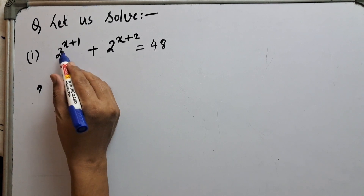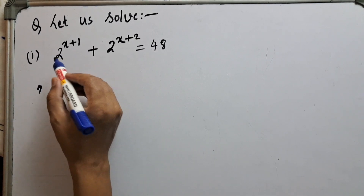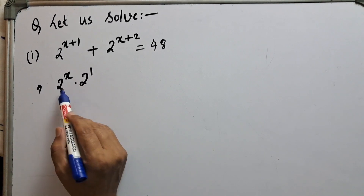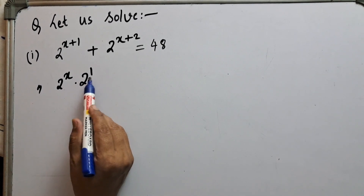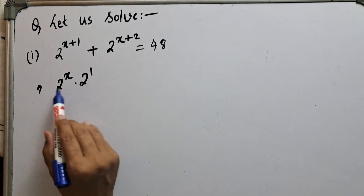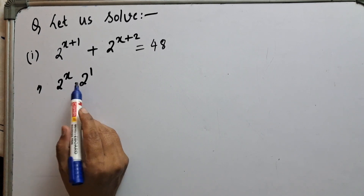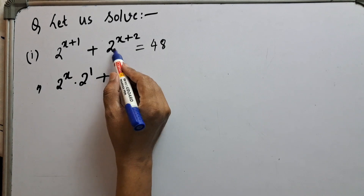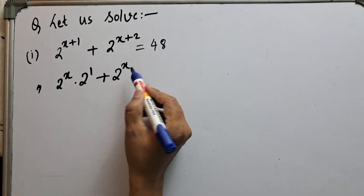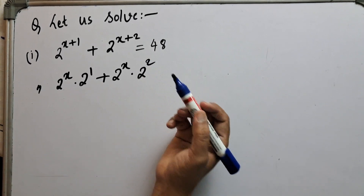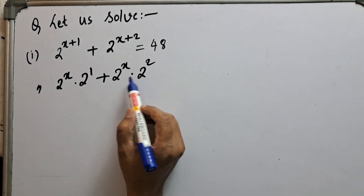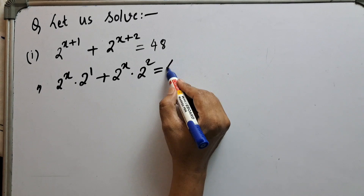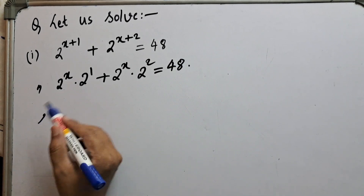Solve means we are asked to find the value of x. Now, 2 to the power x+1 means 2 to the power x into 2 to the power 1. When the bases are equal and we multiply, the powers add up — so x plus 1. Similarly, 2 to the power x+2 means 2 to the power x times 2 to the power 2, giving x plus 2, equal to 48 on the right hand side.